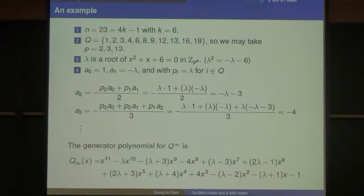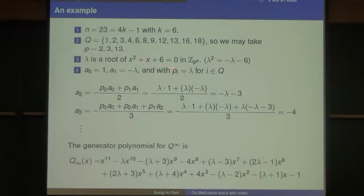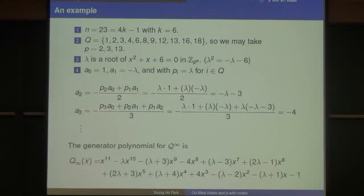Here is an example. When n equals 23, we have n equals 4k minus 1 with k equals 6. The quadratic residues mod 23 are known. The primes we can take are 2, 3, or 13 — no others. Lambda will be a root of x^2 plus x plus 6. Then A_0 is 1, A_1 is minus lambda. Using the formula, A_2 and A_3 are computed, giving A_3 equals minus 4, and so on. You get the generator polynomial for the quadratic residue code. When you take p equals 2, you get the binary quadratic residue code.